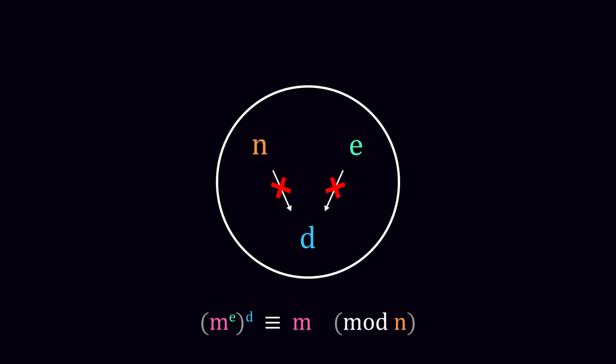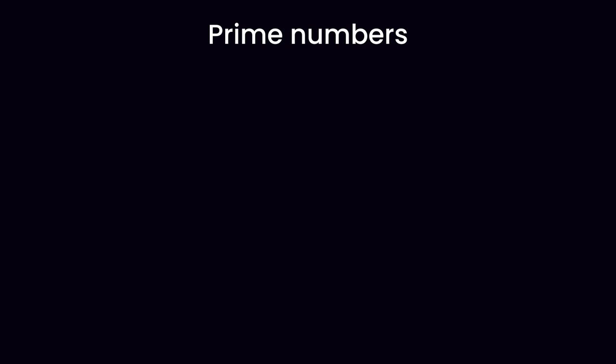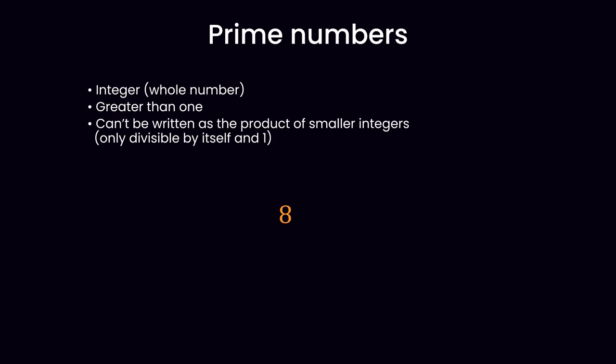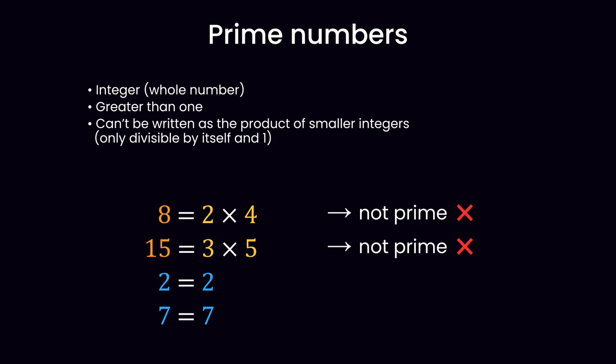Well, finding the equation is the easy part. The challenge is figuring out a reliable way to generate sets of numbers that actually work with this equation, such that you can't find d, the private key, if you know e and n. This is where prime numbers come in. A prime number, or simply prime, is an integer greater than 1 that can't be written as the product of two or more smaller integers. 8 is not a prime number, as it can be written as the product of 2 and 4, so is 15. But 2 can't be written as the product of smaller integers, same for 7, so these two numbers are primes.